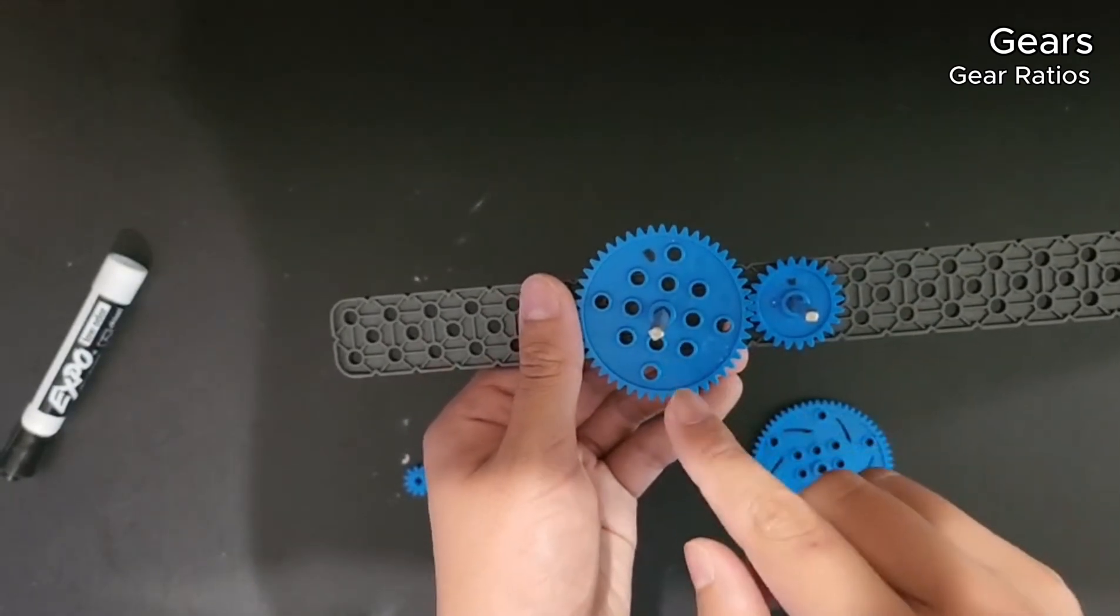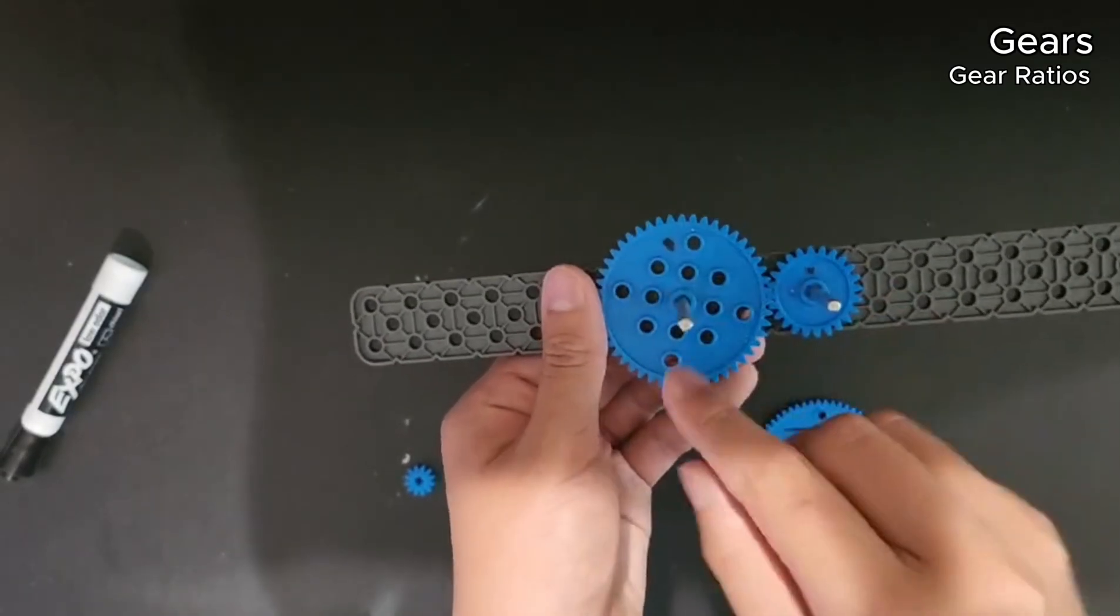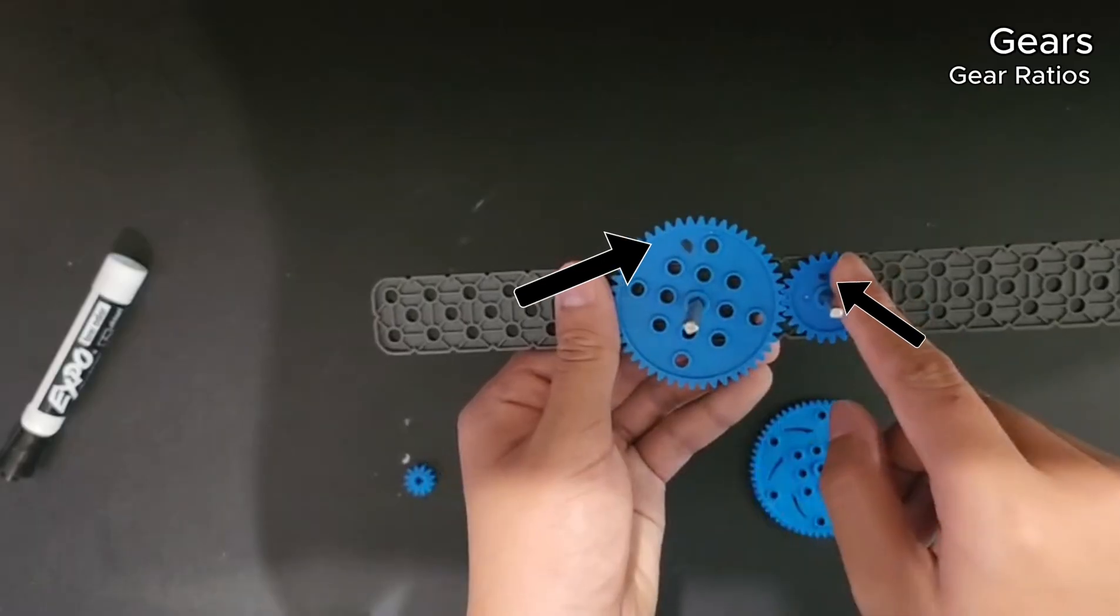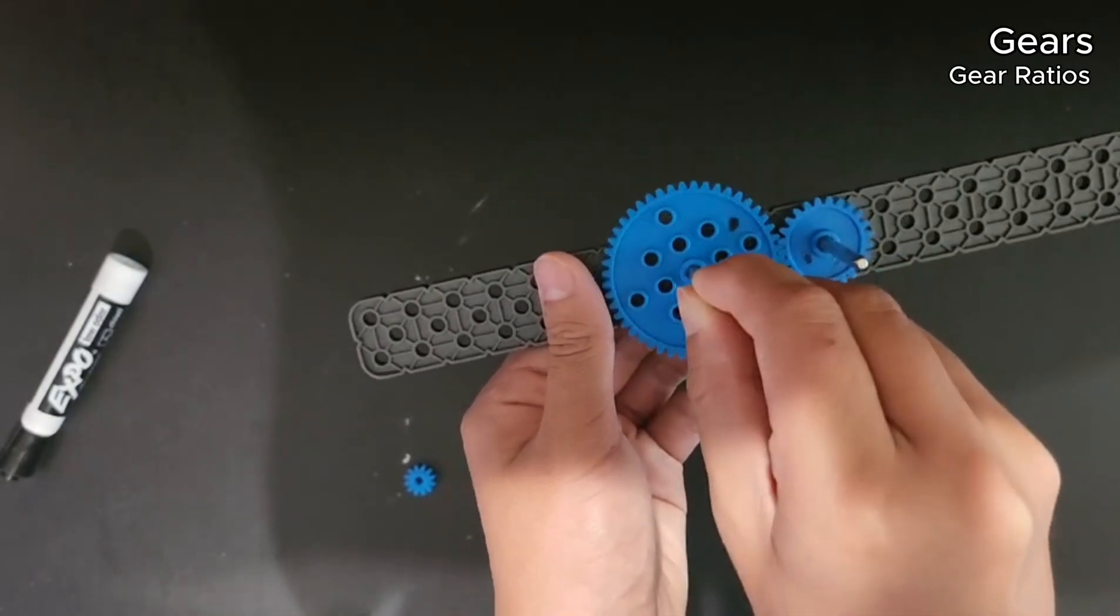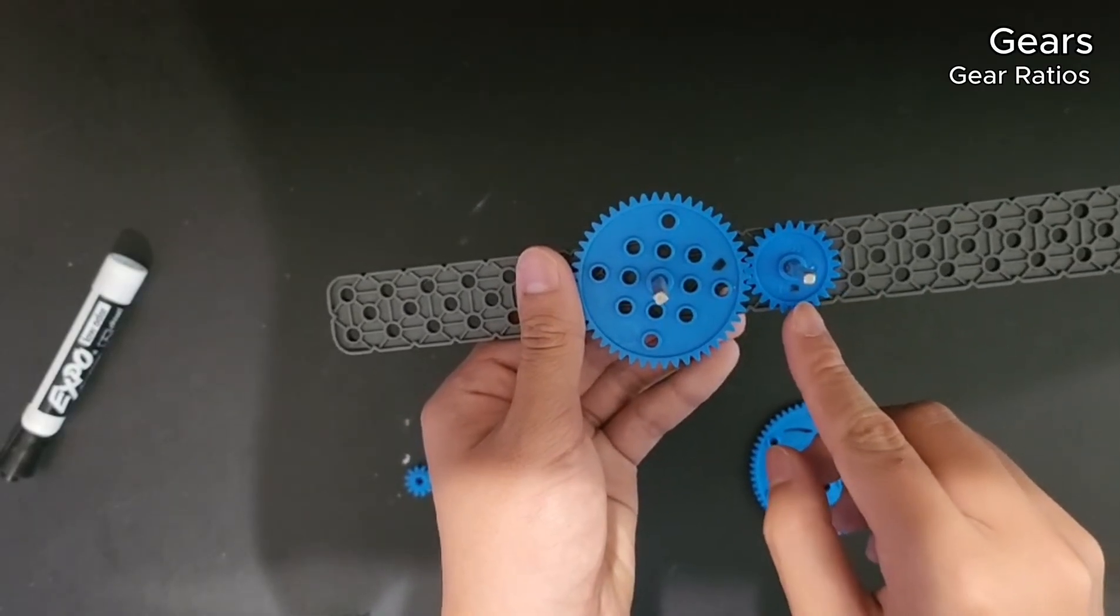So what that means is that if I spin this once, this gear will spin twice. And to show that, you can see that these black tick marks, they're roughly aligned right now. If I spin this one quarter of the way across, you can see that this one actually spins halfway across.